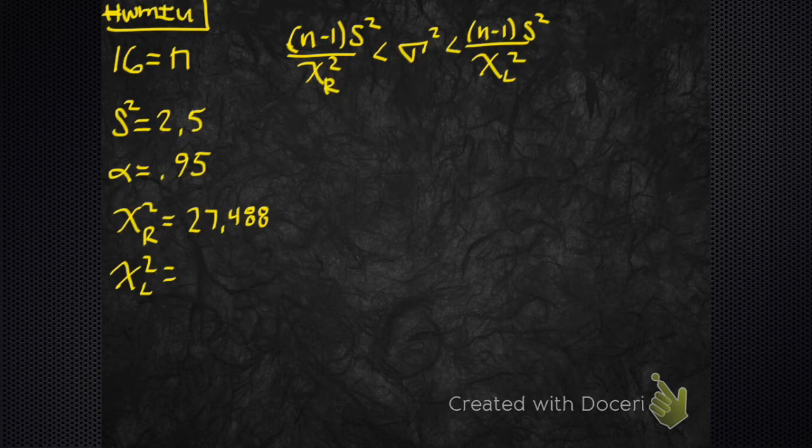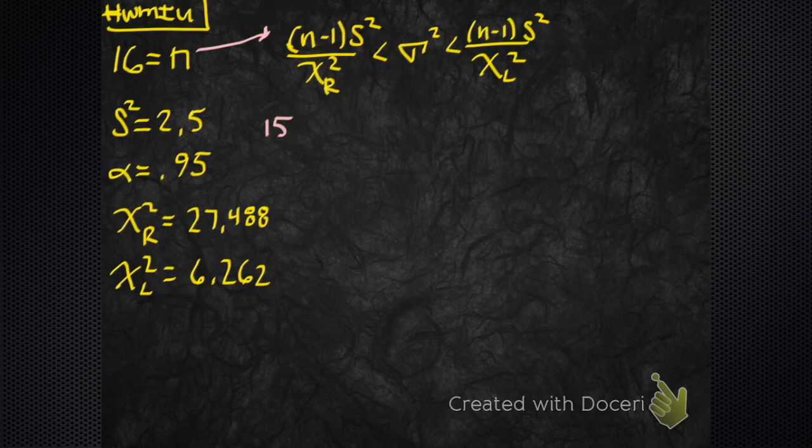Chi-left was 6.262. Now what do we do? Plug it in. n minus 1 is 15. Where are you getting that? I'm taking this and I'm sticking it right there.